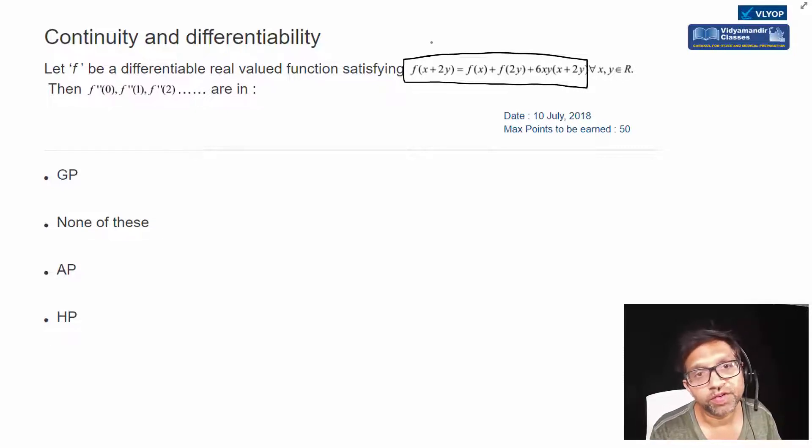Whenever there is a functional equation in x and y, we have to solve that equation to find f(x). Once we have f(x), we'll take the derivative, second derivative of f(x), and then we replace x equal to zero to get the value of these f''(0), f''(1), f''(2).